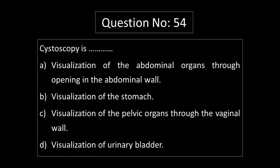Question number 54: Cystoscopy is — Option A: visualization of abdominal organs through opening in the abdominal wall. Option B: visualization of stomach. Option C: visualization of pelvic organs through vaginal wall. Option D: visualization of urinary bladder.